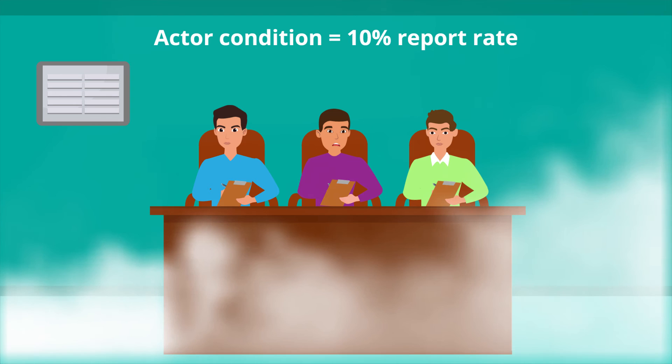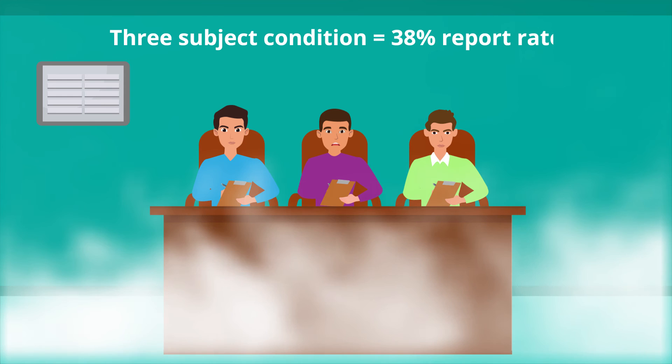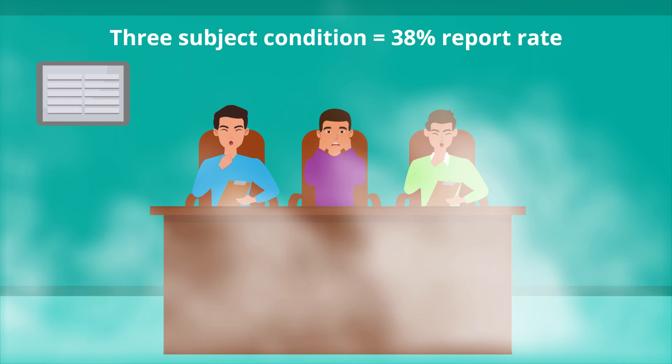The third experimental condition involved three subjects in the room who were all naive to the situation. Only 38% of subjects in this condition reported the smoke. Even though the room filled with so much smoke that subjects began coughing and had their vision obscured, they still refrained from reporting it when in group conditions.